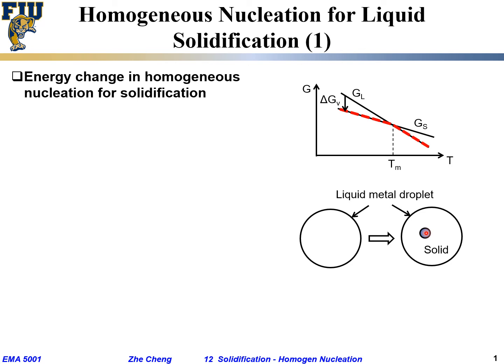Now I have a little bit of solid within this big piece of liquid. Let's define a few terms. Vs is the volume of the solid nucleus — the volume of that tiny solid nucleus. Vl is the volume of the remaining liquid. We can divide the system into two parts: the solid nucleus and the remaining liquid.